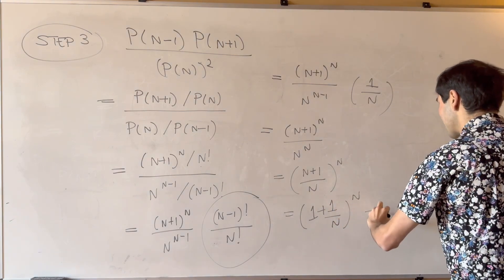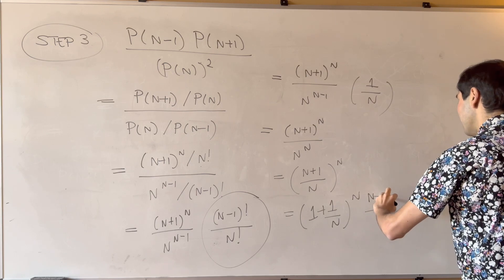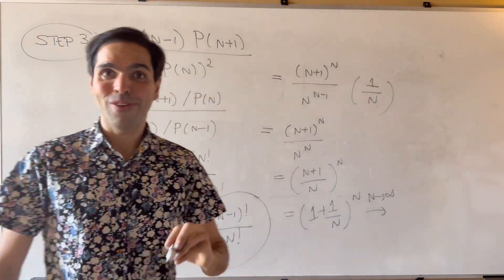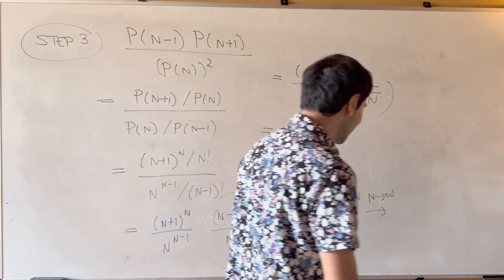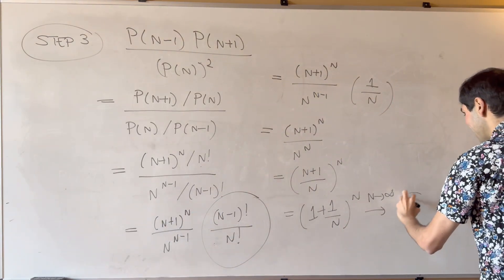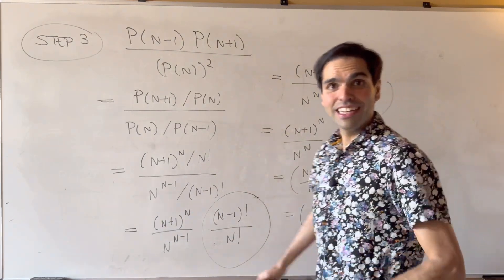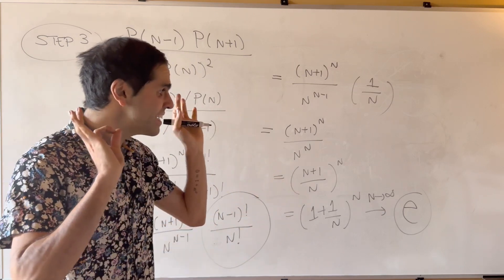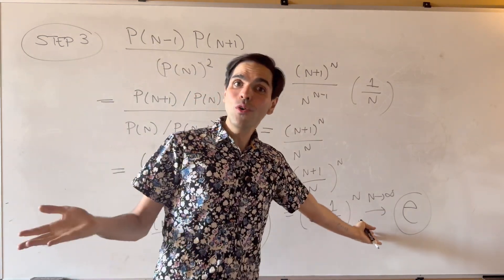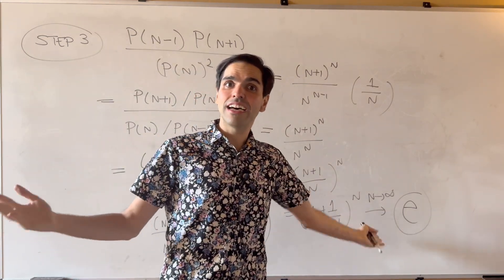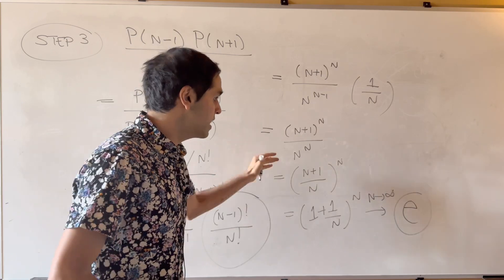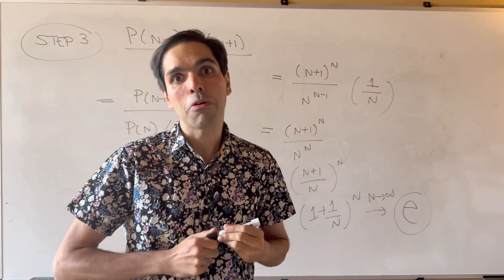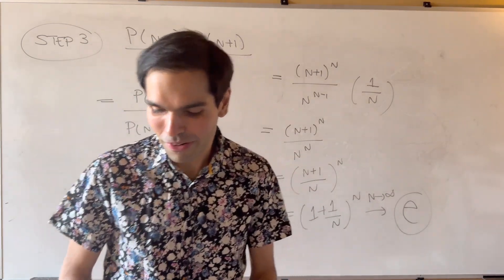And the question is: what happens as n goes to infinity? Really surprisingly, the answer goes to e. Who would have guessed that e comes out of Pascal's triangle? I was very surprised.